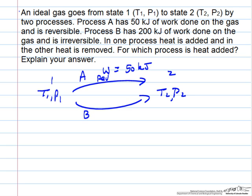For process B, work is 200 kilojoules, and it's also positive, and this is irreversible. It also tells us for one of the processes Q is greater than zero, and for the other Q is less than zero, and the question is which one is A and which one is B?